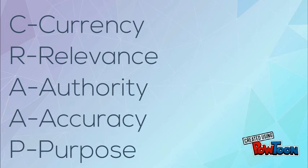So what does CRAP stand for? The C stands for currency, the R for relevance, the first A for authority, the second A for accuracy, and the P is for purpose. Now let's take a closer look at each of those.